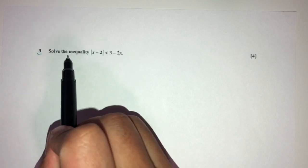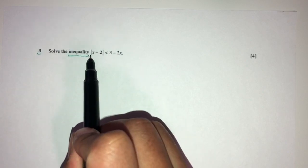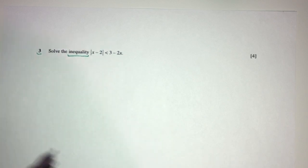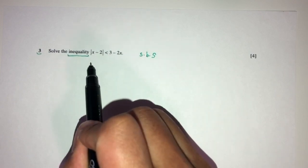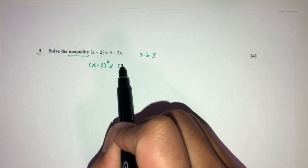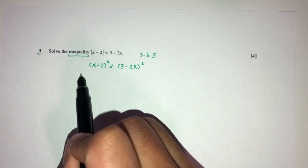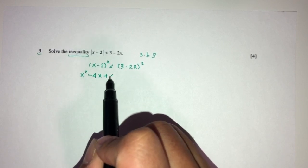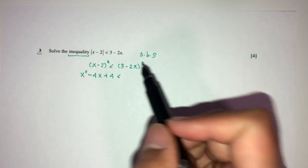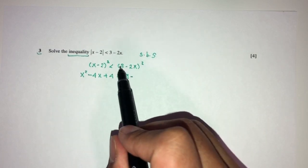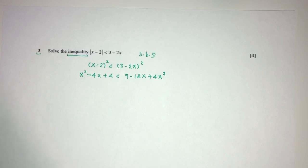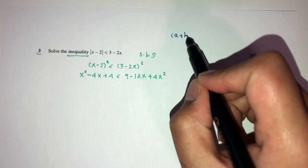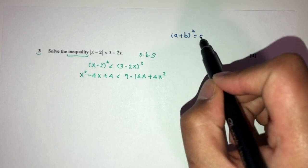Now let's move on to question number three. We have to solve the inequality |x − 2| < 3 − 2x. Since we have x on both sides, we square both sides: (x − 2)² < (3 − 2x)². Expanding the left side: x² − 4x + 4. Expanding the right side using (a + b)² = a² + 2ab + b²: 9 − 12x + 4x².